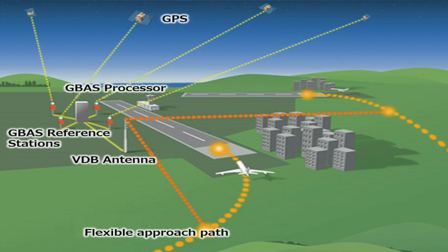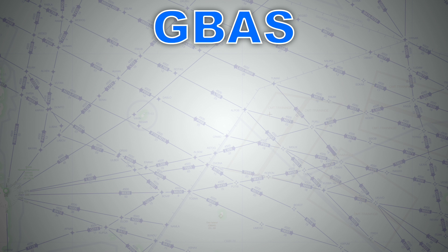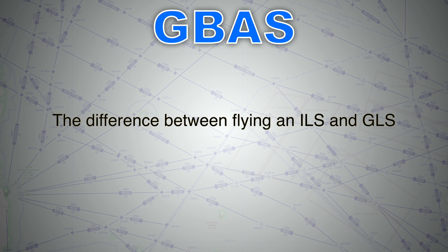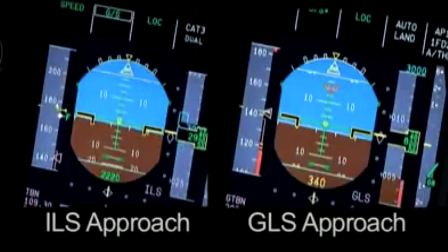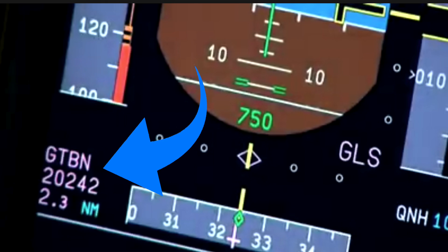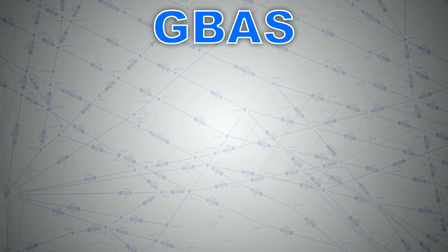GBAS can also serve nearby airports if within a 23 nautical mile radius, which is a big advantage for both airlines and airport authorities. When it comes to flying an ILS versus a GLS, it is exactly the same: you have both horizontal and vertical guidance as well as range information. The only difference is that ILS uses a frequency whereas GLS uses a channel — keeping GLS training to a minimum.